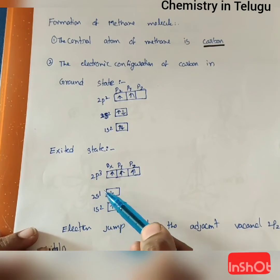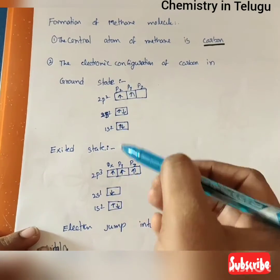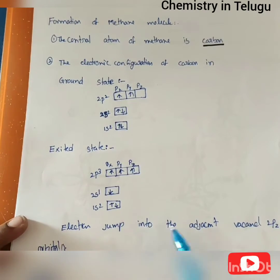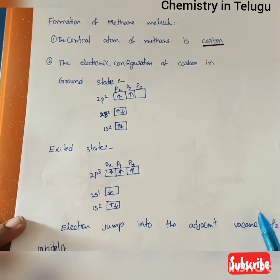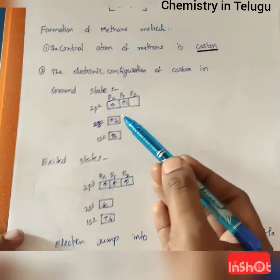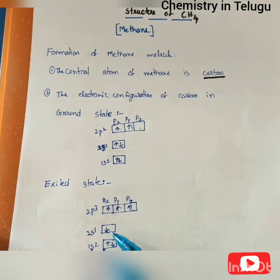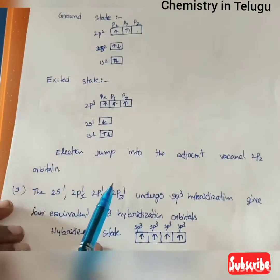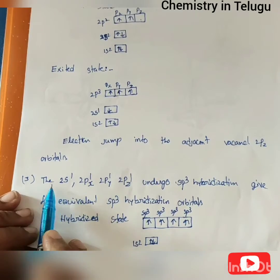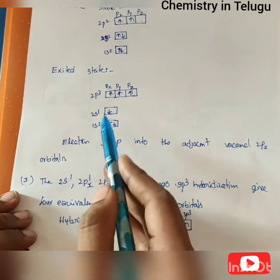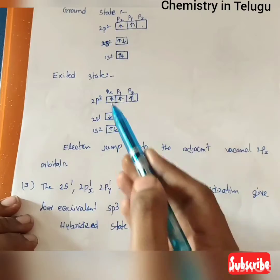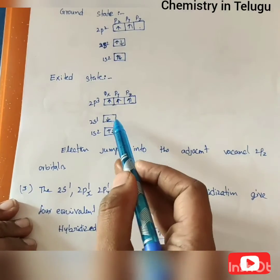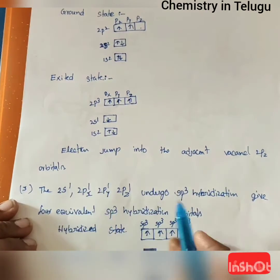An electron from 2s jumps to the vacant 2pz orbital, promoting carbon to an excited state. In the excited state, the configuration becomes 2s¹, 2px¹, 2py¹, and 2pz¹. These orbitals then undergo SP3 hybridization — 1 S orbital and 3 P orbitals hybridize.